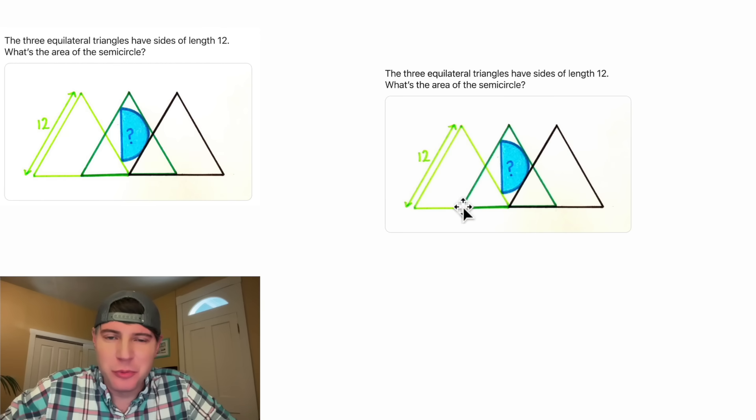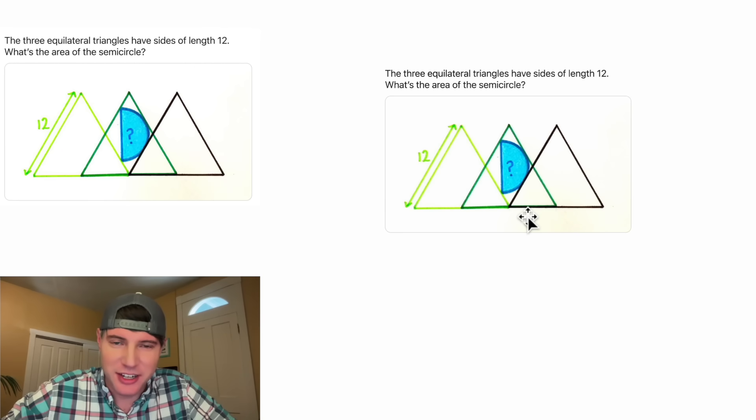Hey guys, this looks like a fun one. We're given three equilateral triangles each with a side length of 12 and there's a semicircle stuck inside of here, and it wants to know what is the area of the semicircle.